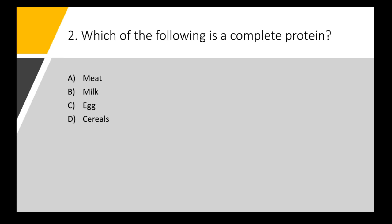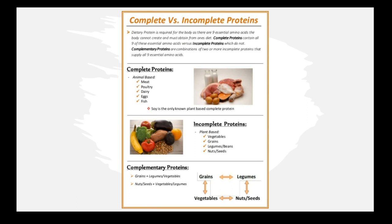Next question: which of the following is a complete protein? The options are meat, milk, egg, and cereals. The answer is options A, B, and C — meat, milk, and egg are all considered complete proteins. Now let's discuss what protein is, what complete protein is, what incomplete protein is, and the various examples.